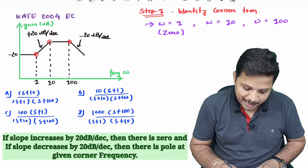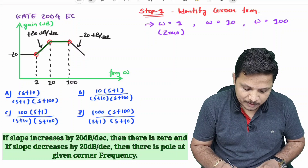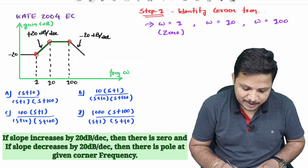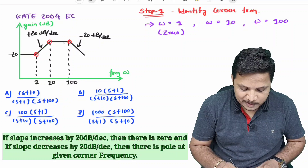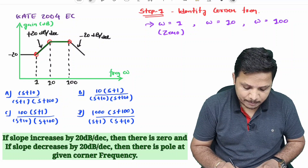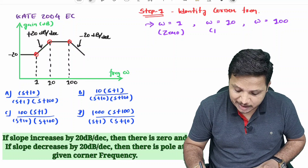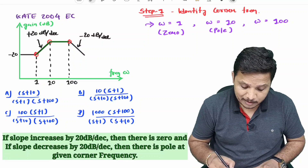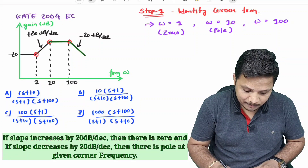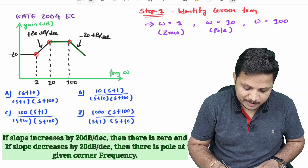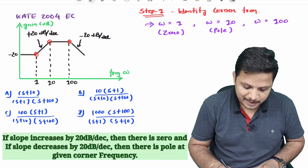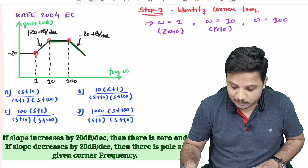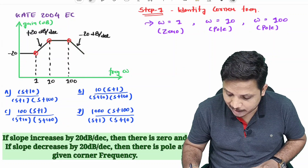At 10 radians per second corner frequency, the slope of the line is decreasing. The previous line had a slope of 20 dB per decade, but after 10 radians per second the slope decreases to zero, meaning the slope is decreasing — so at that corner frequency there is a pole. Therefore, there is a pole at 10 radians per second. Similarly, at 100 radians per second, the previous slope was zero, but after 100 rad/s the slope becomes minus 20 dB per decade, meaning the slope is decreasing, so there is also a pole at 100 radians per second.